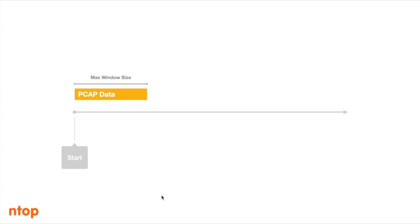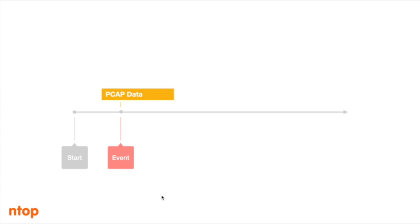At some point ntopdisc reaches the maximum window size configured — the maximum disk space configured through ntopng. When more data arrives, the oldest data is deleted to make room, so this window is a sliding window moving forward. If ntopng detects an event, such as the flow alert we saw before, we can drill down and download the pcap data matching that event. This data is extracted from disk and can be analyzed with Wireshark.